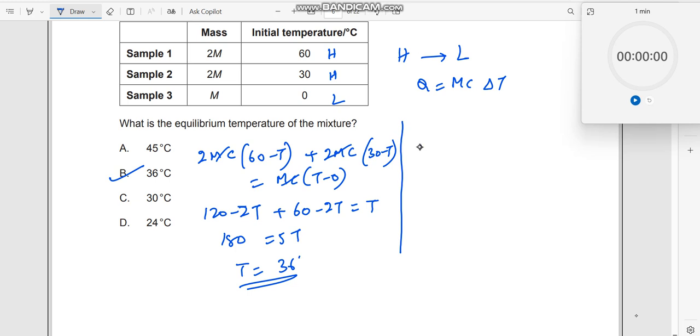Okay. So therefore now what we do is I will say heat lost by the system is this one which would be 2m c into 60 minus t. This is heat lost by this system and this should be equal to heat gain. Who is gaining heat? This is gaining heat. This is gaining heat. I do not know whether this gains or not but let me assume like this.